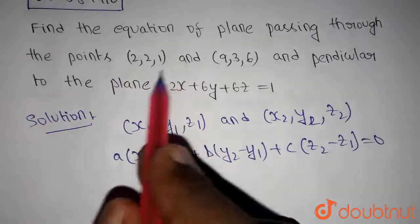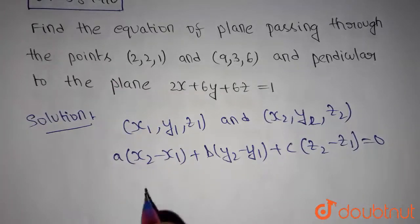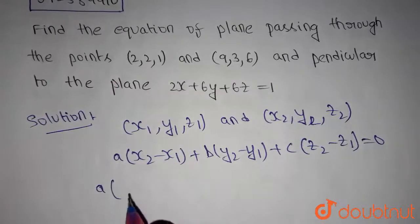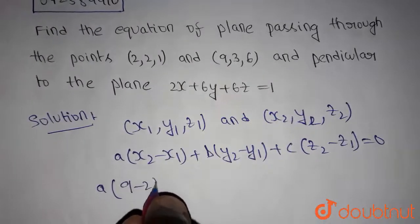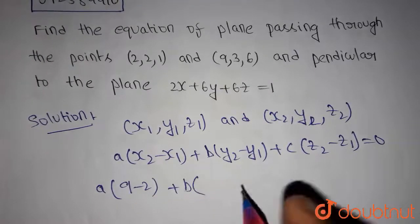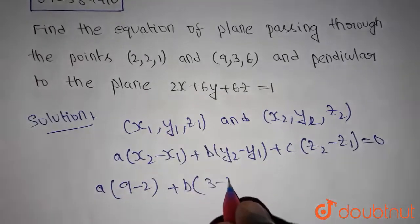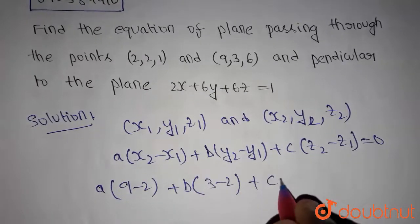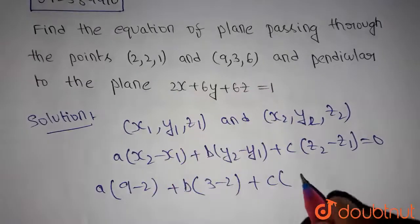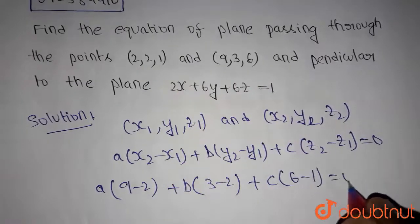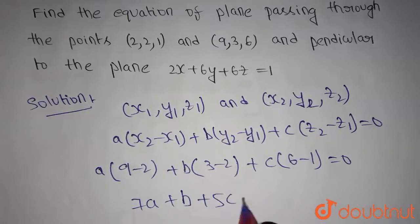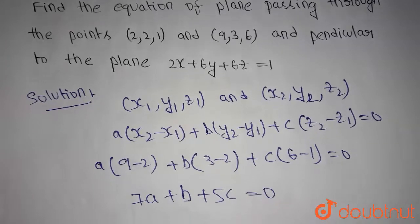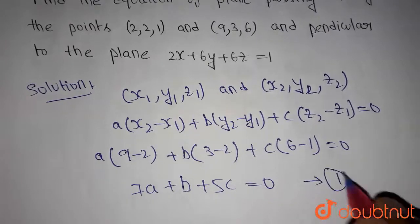So we know these two points. Let's substitute them into the general equation. We get a(9 − 2) + b(3 − 2) + c(6 − 1) = 0, which gives us 7a + b + 5c = 0. Let's call this Equation 1.